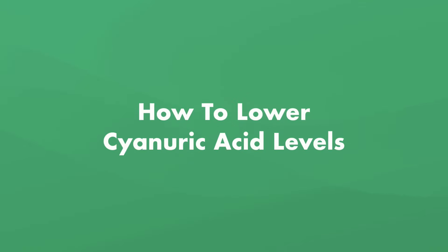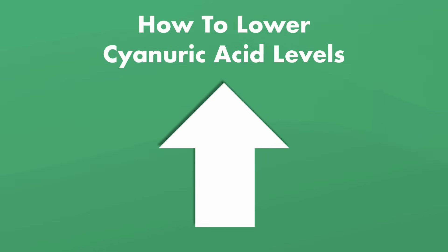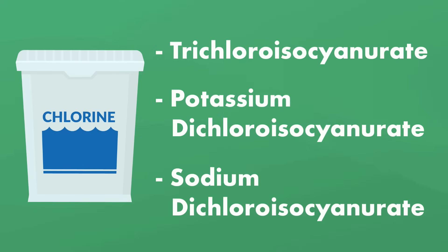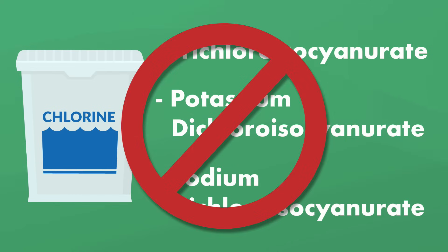Here's how to lower the cyanuric acid levels in your pool. If your cyanuric acid levels are too high, check to see if you're using stabilized chlorine. Stabilized chlorine already contains a small amount of cyanuric acid. And if you see certain chemicals listed on your label, your chlorine contains cyanuric acid. If this is the case, you may want to switch to chlorine without the added CYA to prevent your levels from rising again.